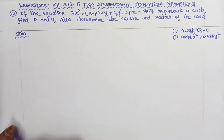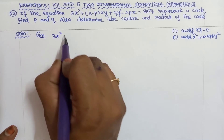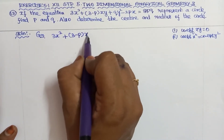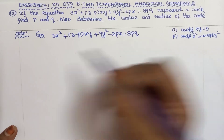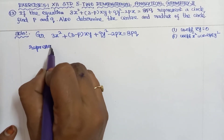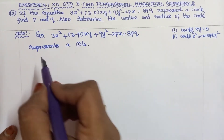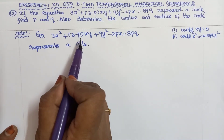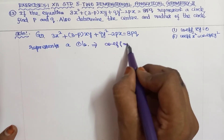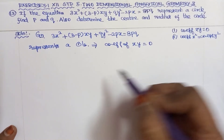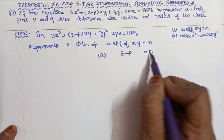The given second-degree equation is 3x² + (3 - p)xy + qy² - 2px = 8pq, which represents a circle. For this to represent a circle, the first condition is that the coefficient of xy must equal zero. So 3 - p = 0, which implies p = 3.